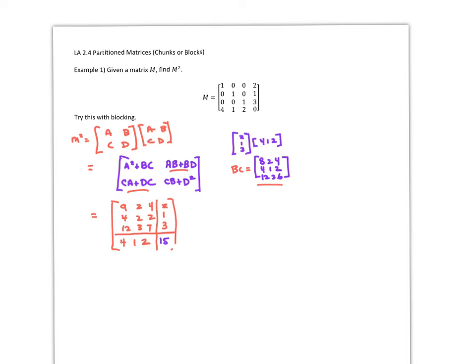Hi, this is 2.4 partition matrices. I like to call it chunks, or you might call it blocks. What happens is that when we deal in the real world of big data and you have to multiply two matrices together, you might want to chunk a big block of them because you might have the identity matrix showing up or you might have a bunch of zeros showing up.